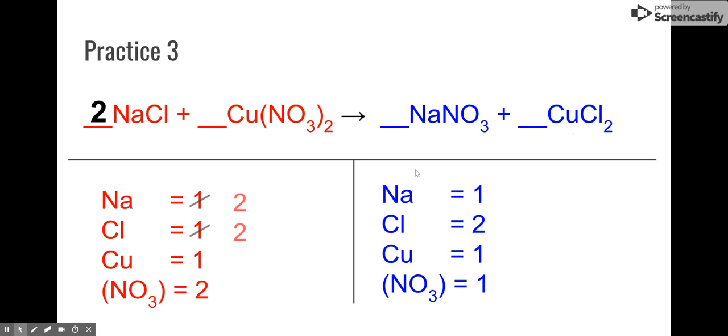I'm going to put two in front of the sodium chloride. Now that's going to screw up my sodiums, but it's going to fix my chlorine. So I got to go fix our sodium. So let's go fix the sodiums on the right hand side. That fixes our sodiums. And hey, it actually fixed our nitrates too. Remember this two foils into both sodium and that entire nitrate. So I have two whole sets of nitrate, which is what I needed.